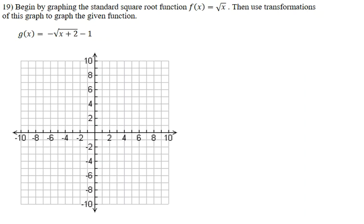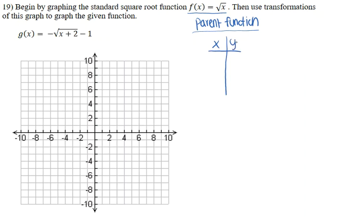Let's start by finding our given points for the parent function. The parent function is the given function without any of the extra add-ons — like the negative sign in the front, the negative one in the back, the plus 2 in the parenthesis — so f(x) = √x. Let's get a t-chart going with x and y values. Good x values to use for square root are perfect squares such as 0, 1, 4, 16, 25, 36. I'm going to work with 0, 1, and 4.